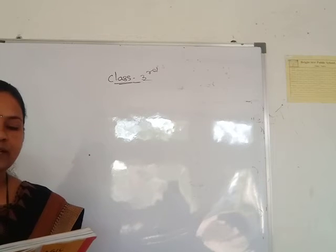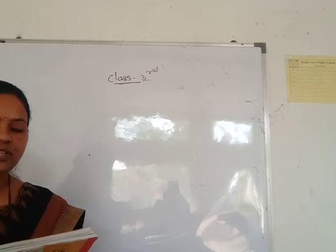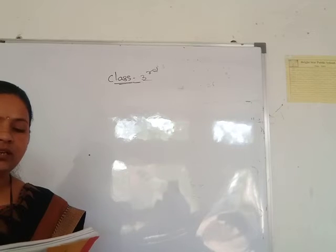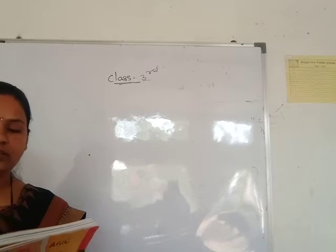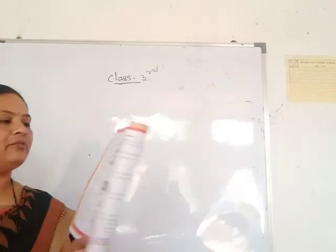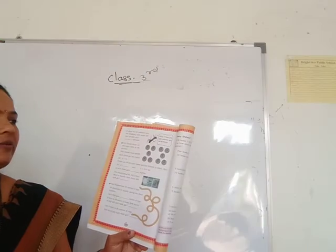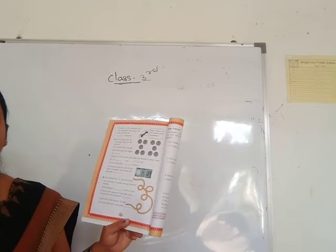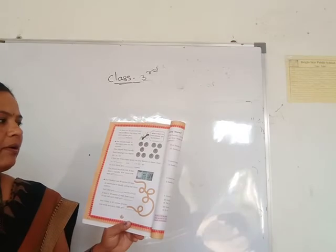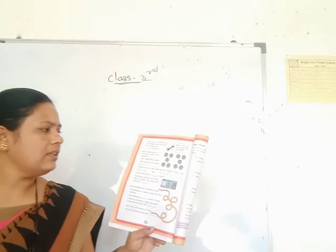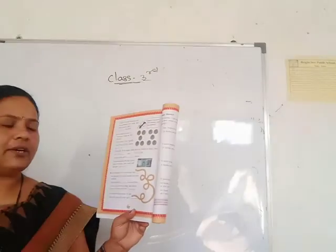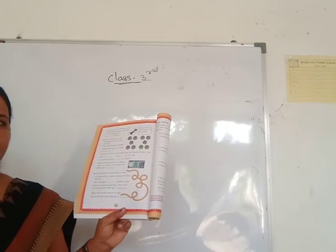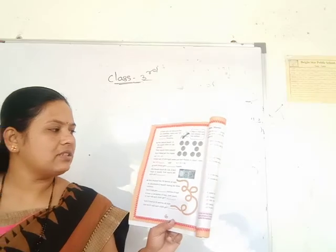If there are sixty bananas and two monkeys, how many will each monkey get? Sixty bananas and only two monkeys — each monkey gets thirty bananas. Next: five friends found ten five-rupee coins on the ground, which means fifty rupees. They share equally. Fifty divided by five is equal to ten.